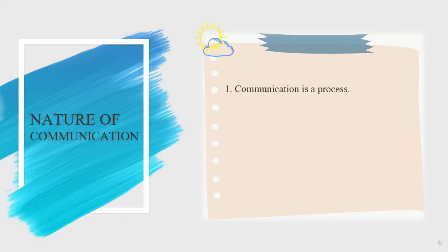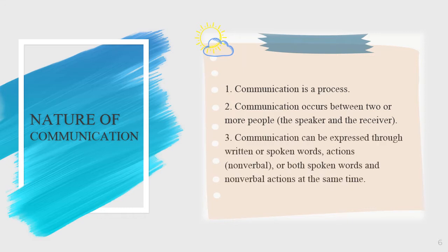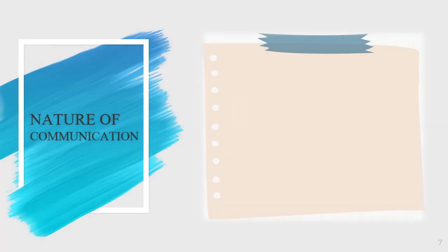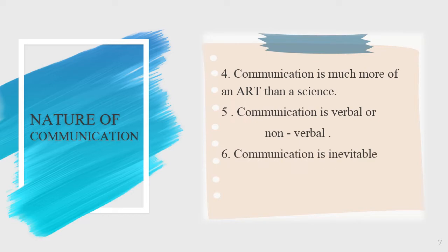The first is communication is a process. The second is communication occurs between two or more people, the speaker and the receiver. The third is communication can be expressed through written or spoken words, actions or non-verbals, or both spoken words and non-verbal actions at the same time. The fourth is communication is much more of an art than a science. The fifth is communication is verbal or non-verbal. The sixth is communication is inevitable. And the last is communication is unrepeatable.